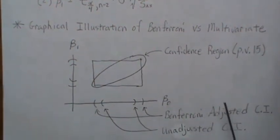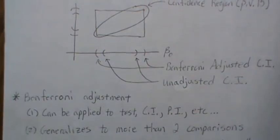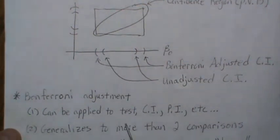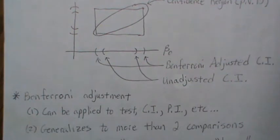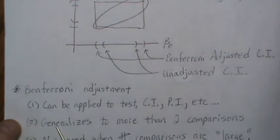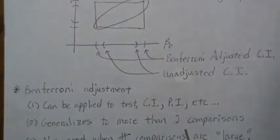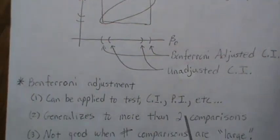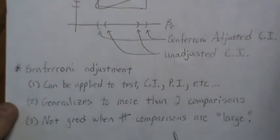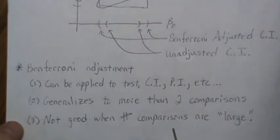The Bonferroni adjustment is so powerful and easy—it can be applied to any test, confidence interval, or prediction interval. That's the beauty and strength of the Bonferroni adjustment. It generalizes to more than two comparisons so easily. Here we had two comparisons so we conducted each at the alpha over two level, but if we had r comparisons we would conduct each one at the alpha over r level.